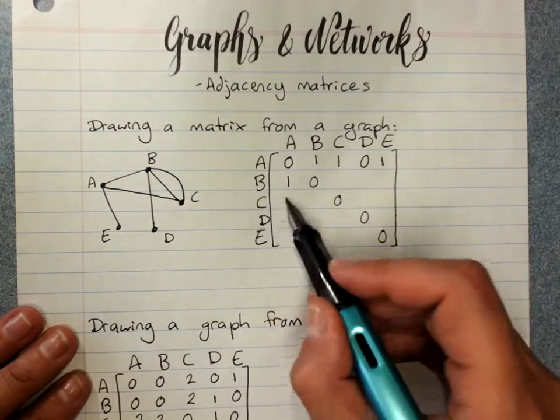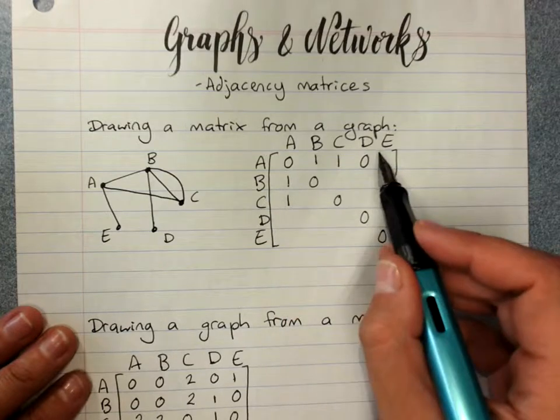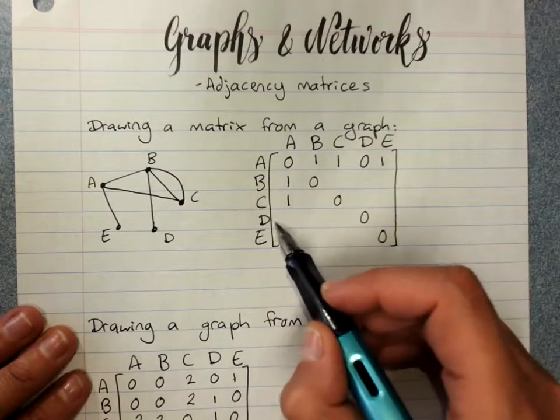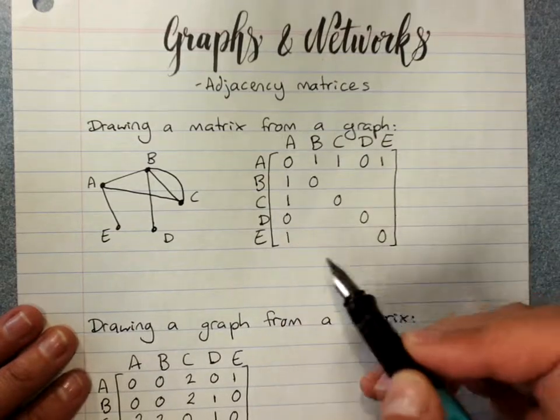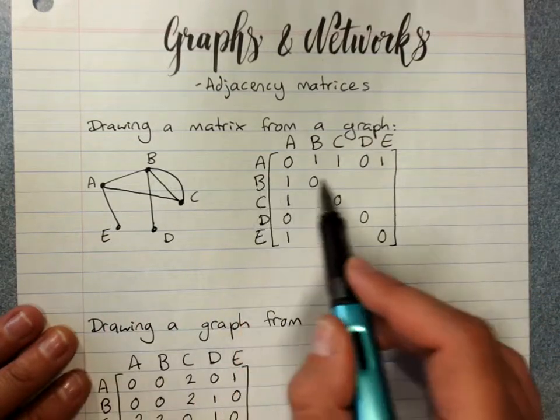A to C is one, so C to A is one. A to D is zero, so D to A is zero. A to E was one, so E to A is one. Or you can just go to each vertex and work along.